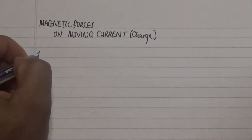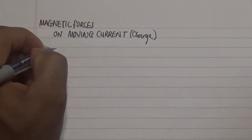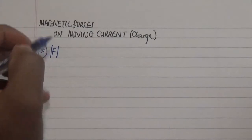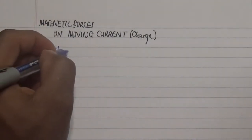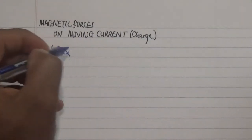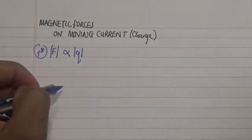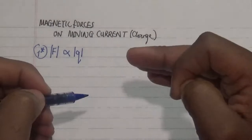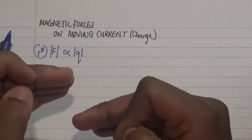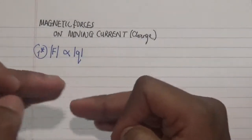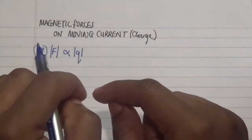The first characteristic we need to take note of is the magnitude of the force of the magnetic field. The magnitude of the force is directly proportional to the magnitude of the charge, represented as Q. If I increase the quantity of charge, I increase the force generated, or vice versa.